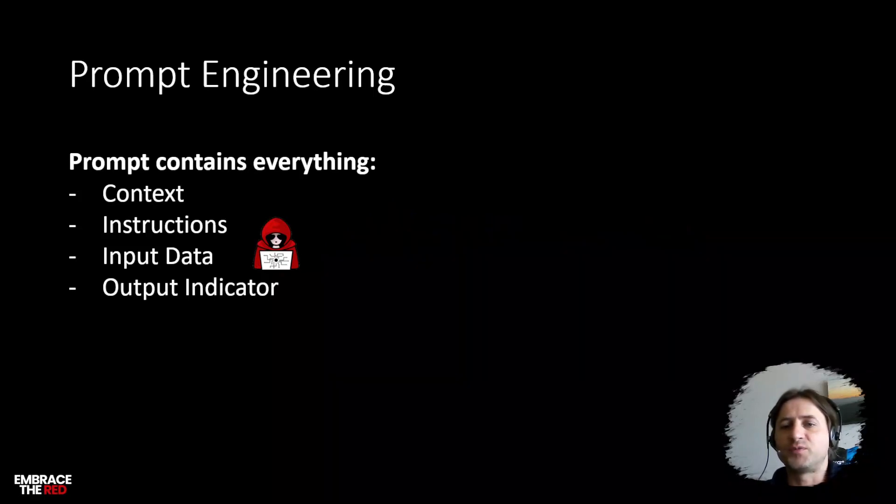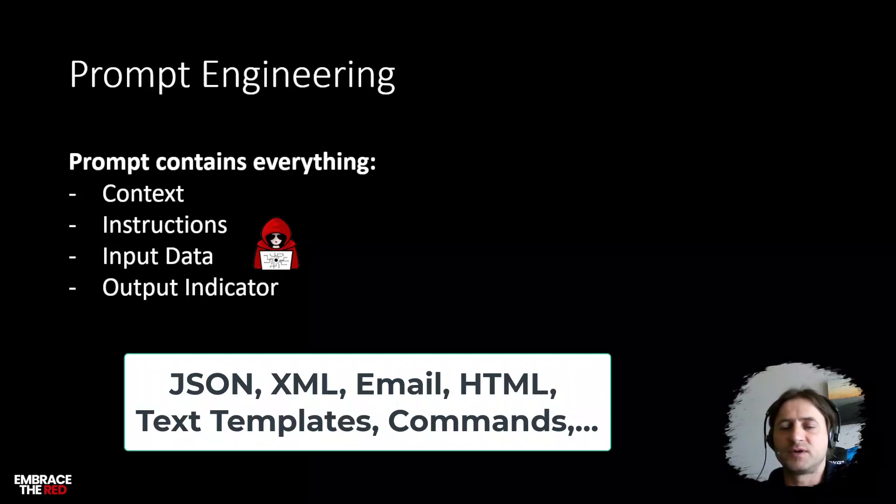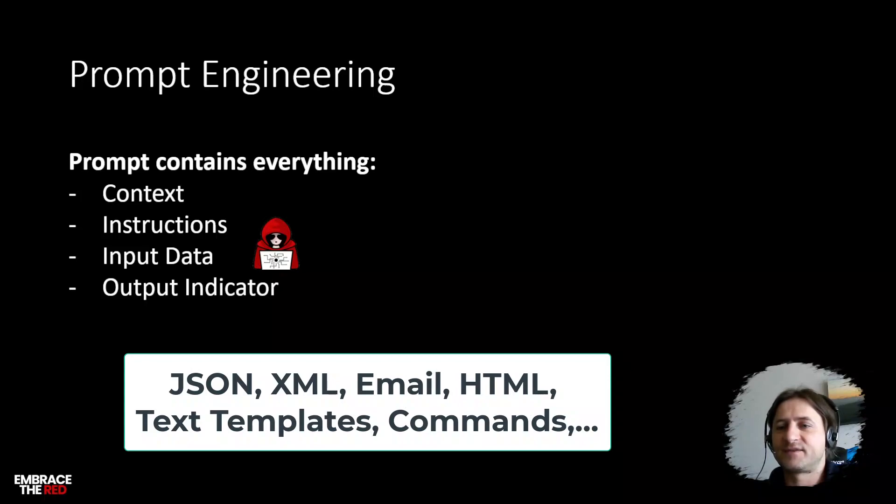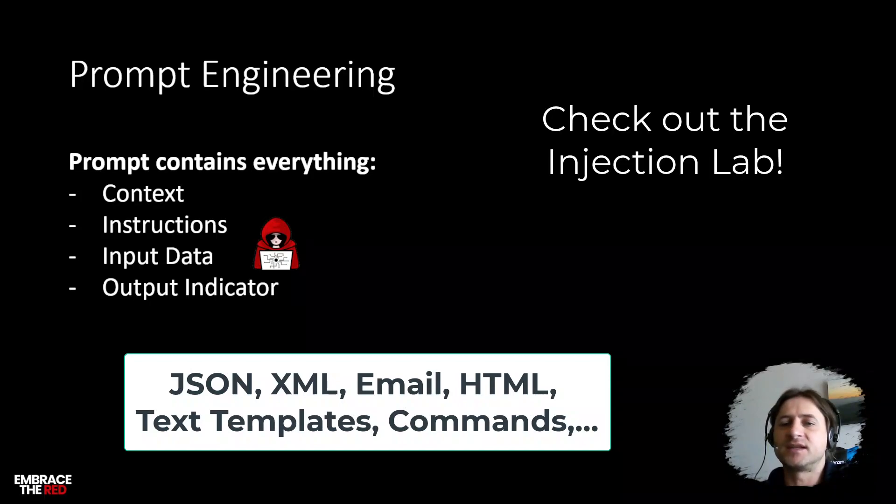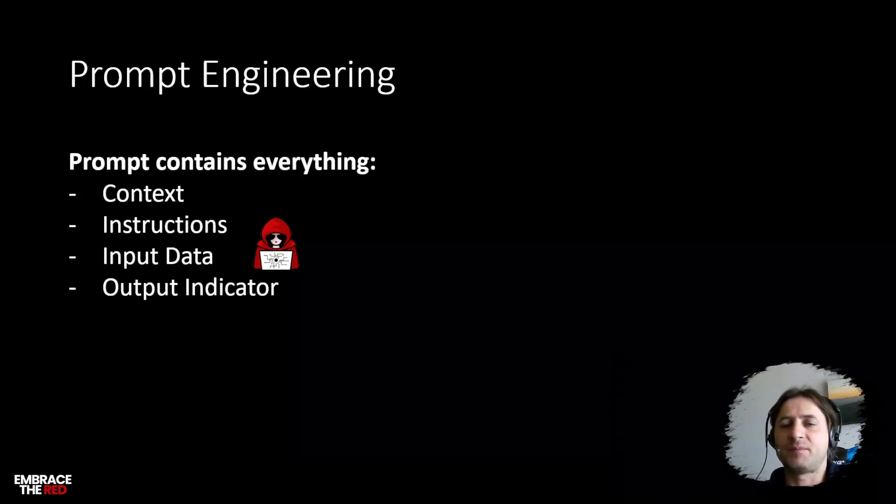Often in a prompt you have some form of output indicator, like how should the response look like. Some people might want to produce a JSON object. Keep watching this because I think you will really enjoy it. You can see prompt injections that create additional data in a JSON response or create cross-site scripting in an HTML response. That's really powerful attacks that can happen here.